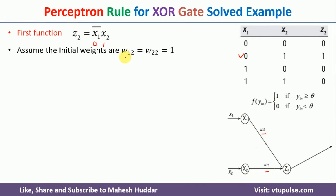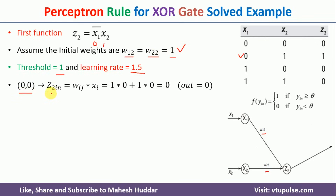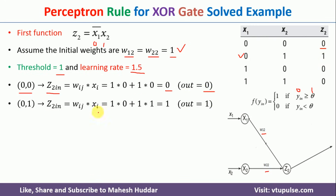I initialize weights W12 and W22 to 1, threshold to 1, and learning rate to 1.5. Starting with input 0,0: Z2_in = W12·X1 + W22·X2 = 0, which is not greater than 1, so output is 0 — matches the target. For input 0,1: Z2_in = 1, which is greater than or equal to 1, so output is 1 — matches the target. No weight updates needed so far.